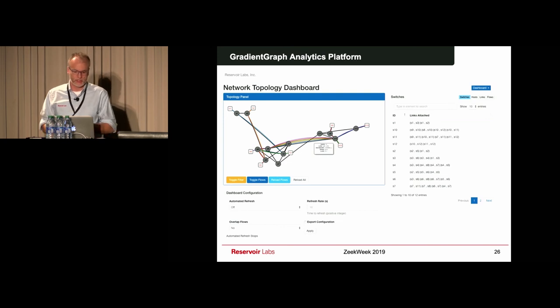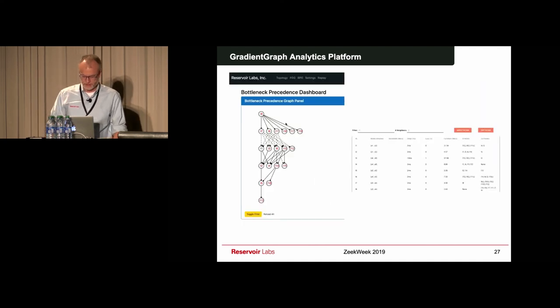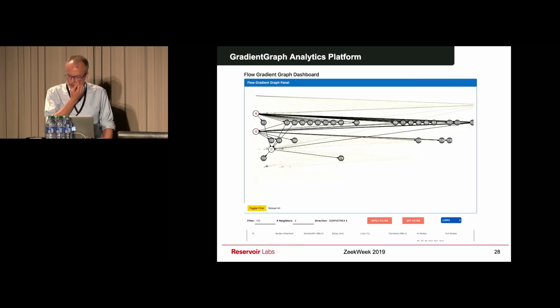Just some visualization. This is the output. That's the interactive dashboards. You get to see, of course, the networks. This is Google's B4 network, the 12 data centers that I mentioned. You get to see the flows. That's the traditional view of a topological view with the connections. But then you get to see the bottleneck structures of the network. This is visualized in real time. You can also play them back in time. And also the flow gradient graph. This is a view where we're selecting Flow 22 and we're asking the tool to give us the region of influence for Flow 22.